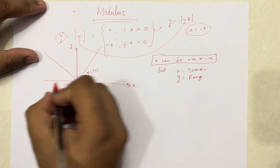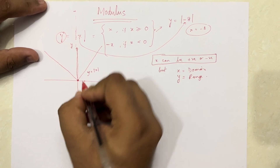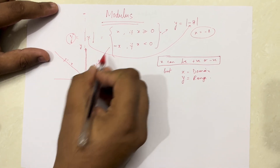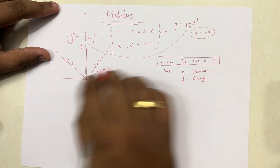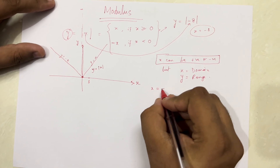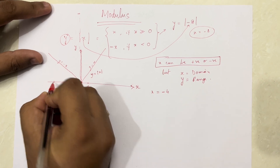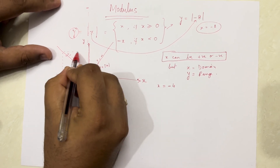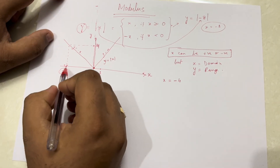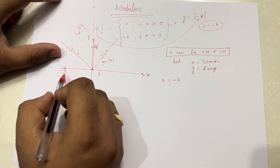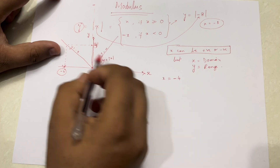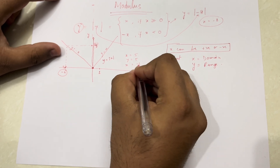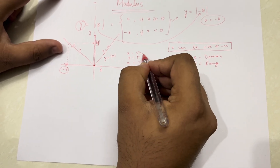This is the graph of y equals x, and this graph is y equals minus x. Combined, this graph is y equals mod x. Say for example, x is equal to minus 4 — it will be somewhere here on the graph, and y will be 4. Simply, whatever value you enter for x, mod will make it positive. So if x is 5, y will be 5; if x is minus 5, y will still be 5.